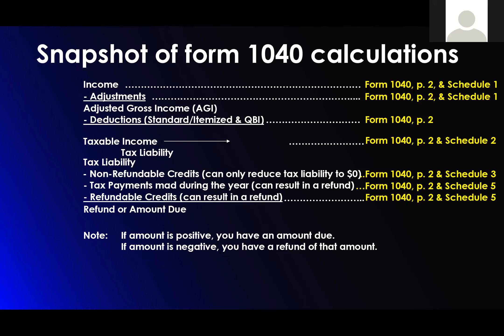Then you have your deductions, standard or itemized — all on page two of the 1040. That gives your taxable income, which is 1040 page two and Schedule two, and that determines your tax liability. Your tax liability is then reduced by non-refundable credits, which is Schedule three — reduces liability only to zero. Then the tax payments made during the year are from Schedule five, which combined with your refundable credits subtracted from tax liability gives you your refund or amount due.